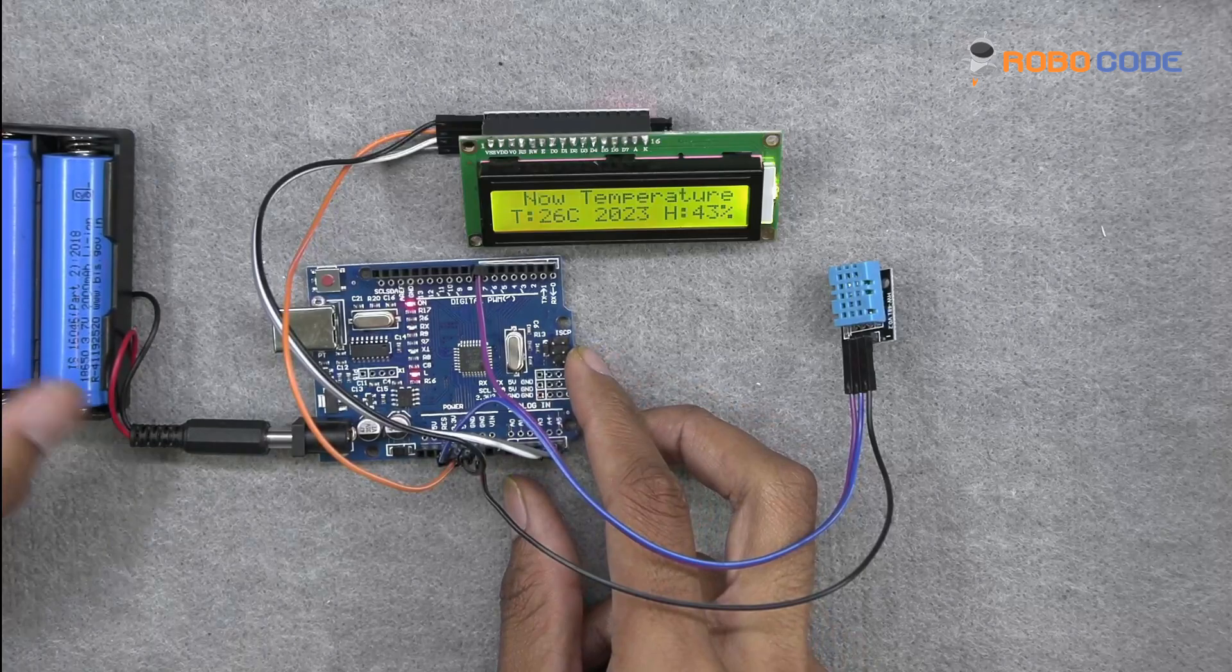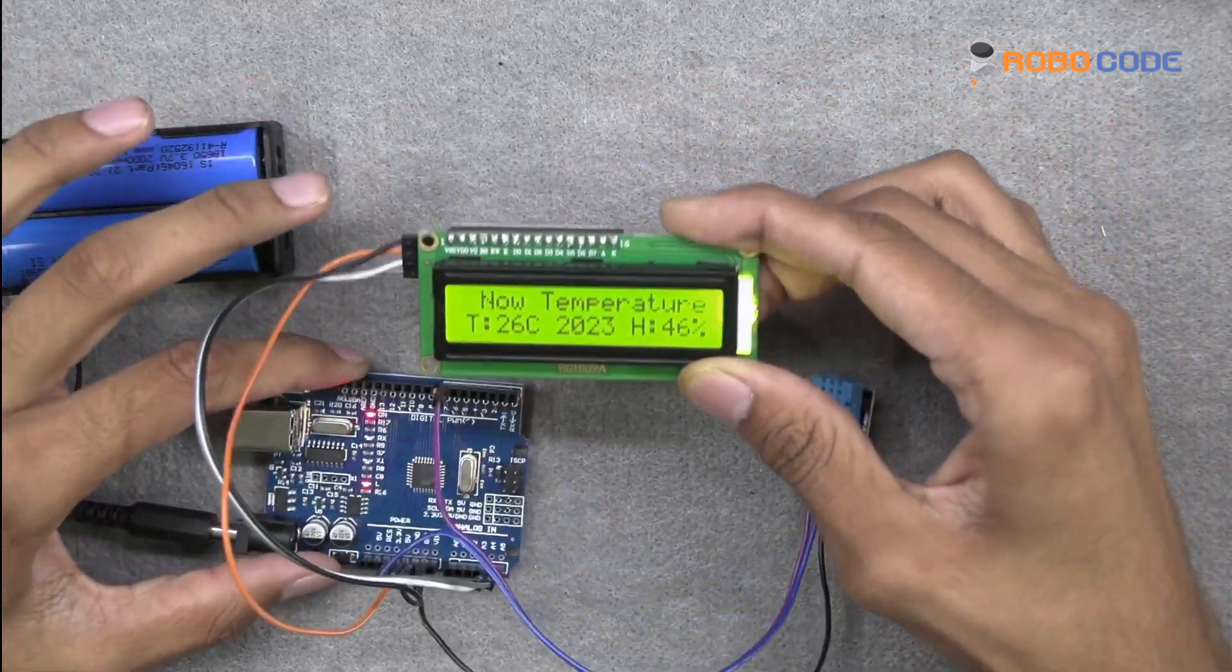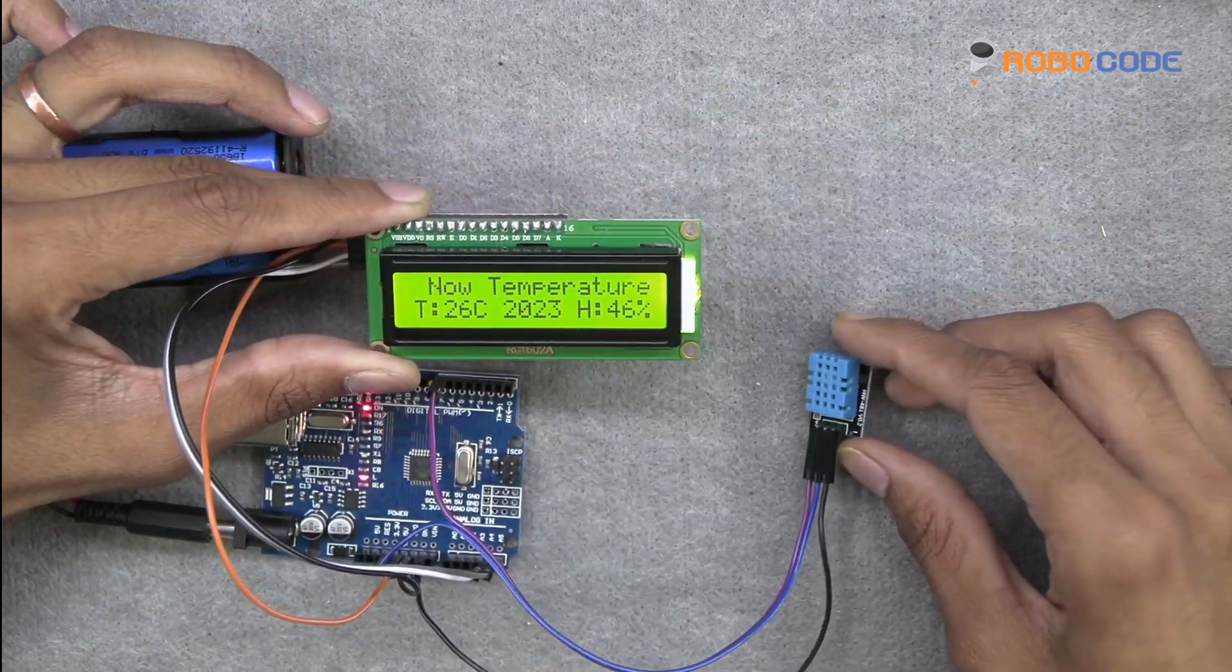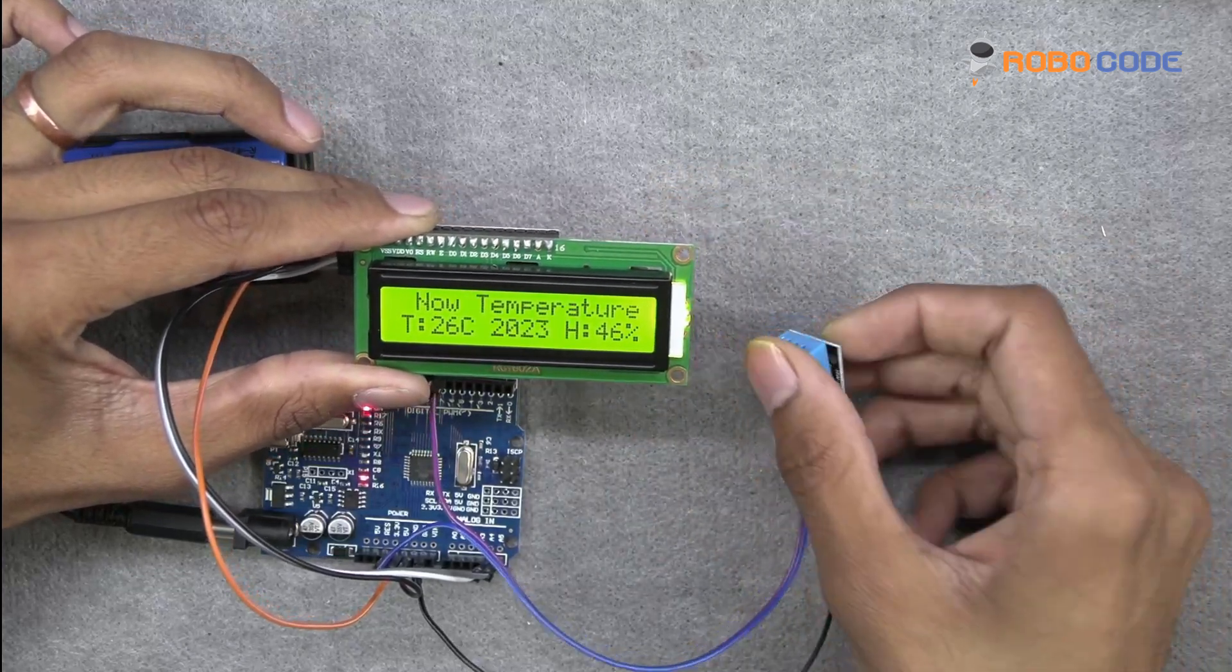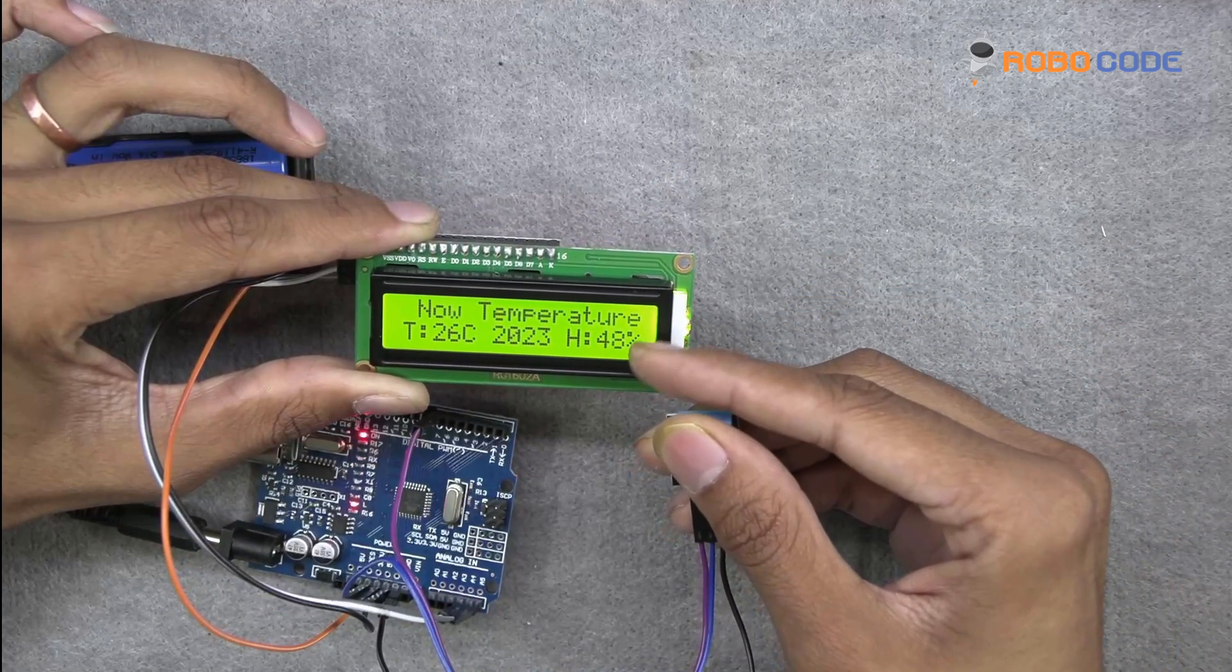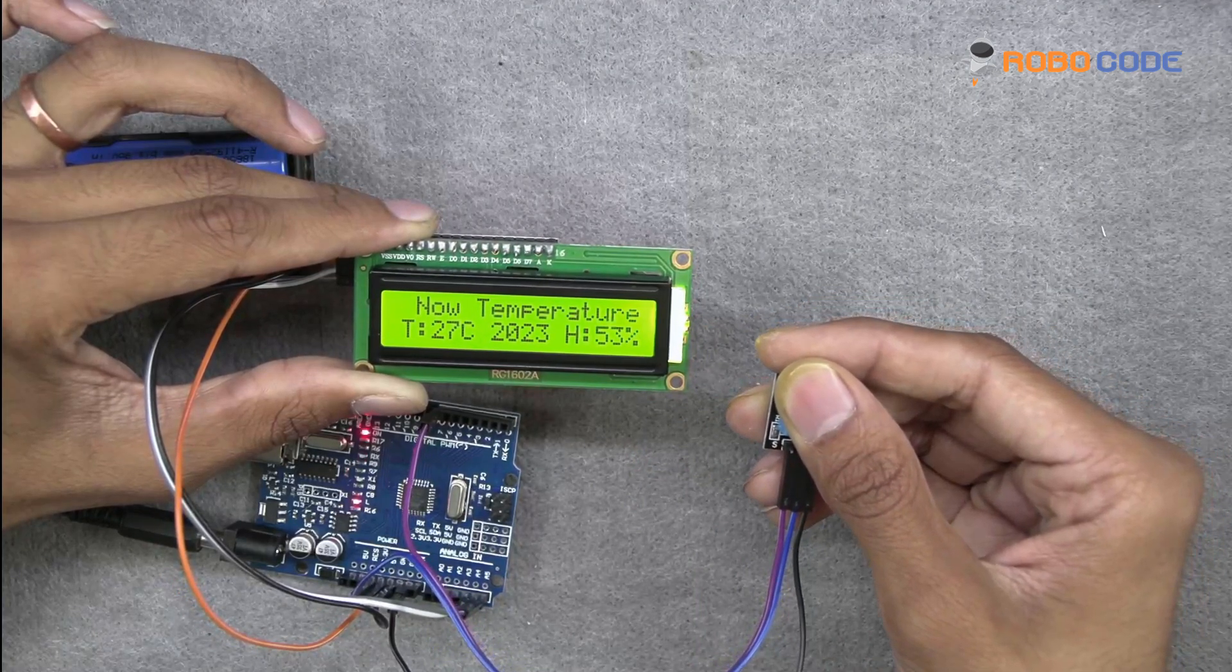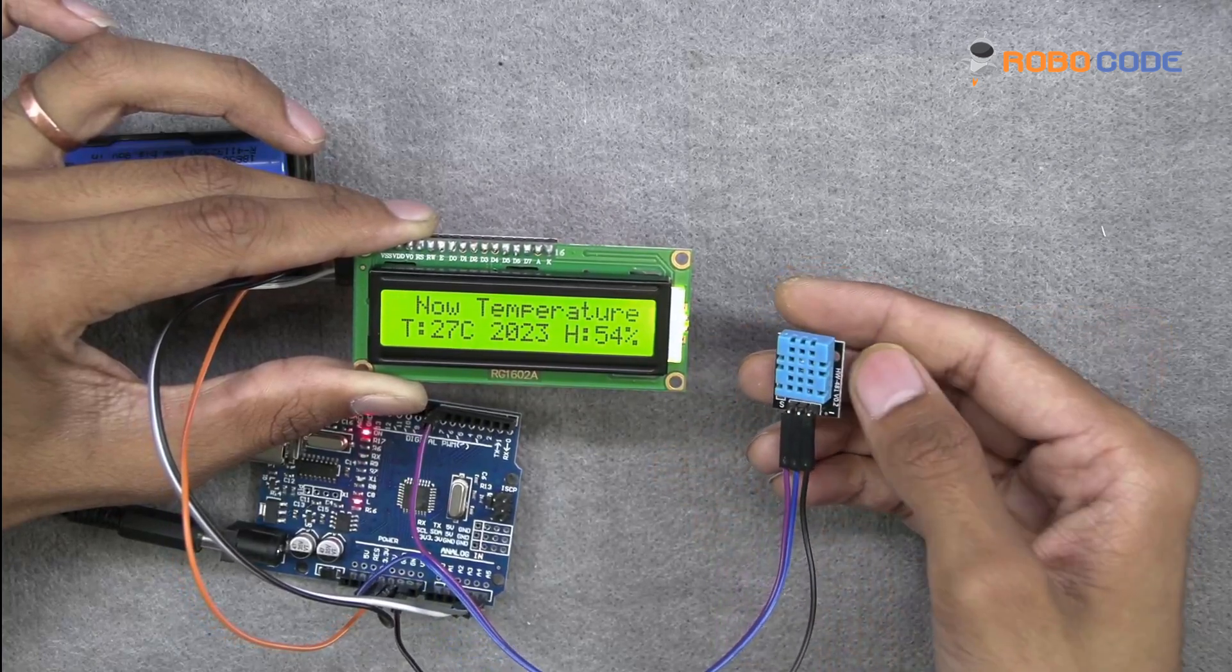If everything is done properly then you will see the display on the LCD. And you can see now temperature 26 degrees Celsius, DR 2023, and humidity 46%. So if we take the humidity sensor in our hand and hold it, you can see the humidity would increase from 46 to 47, 48, 49. So this is how we can create a weather station using the humidity sensor.